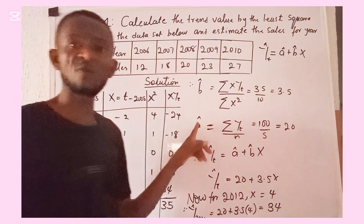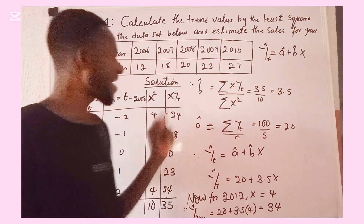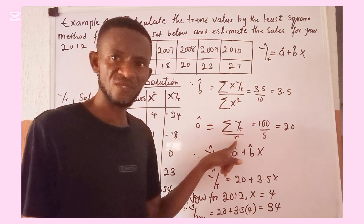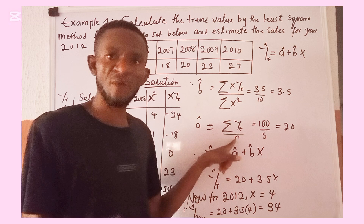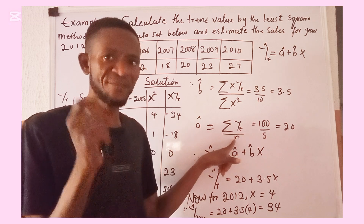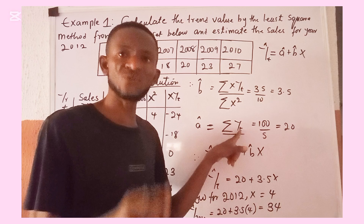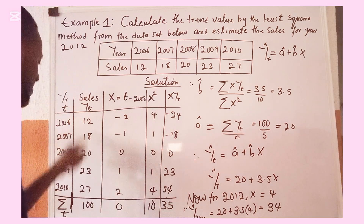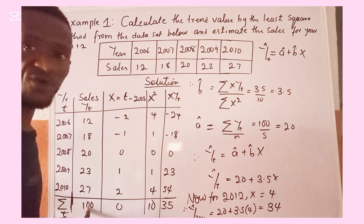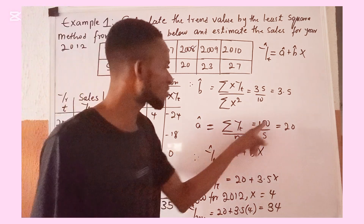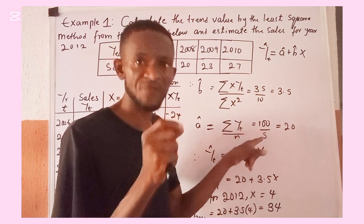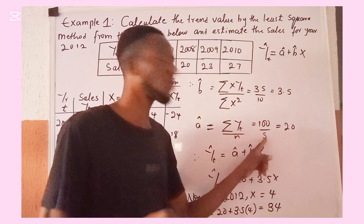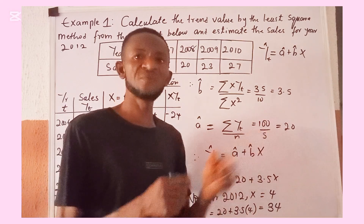For a-cap, the formula is the sum of y subscript t divided by n, where n is the number of data points — the sample size. The sum of sales is 100, and we have 5 data points, so a-cap equals 100 divided by 5, which gives 20.